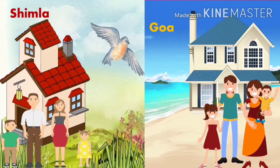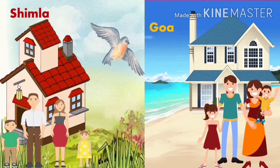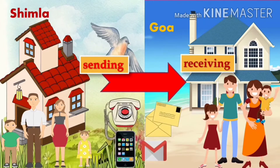Chiku's family lives in Shimla and his aunt's family lives in Goa. So children, how will they communicate or send and receive messages? They can use mobile, telephone, letters, and email to talk to each other.